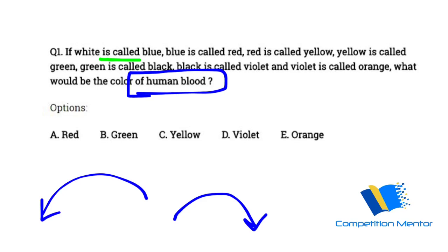As you have seen, human blood is red color and red is called yellow. See, red is called yellow. This one, this direction. So the answer will be yellow. So what would be the color of human blood? Yellow.